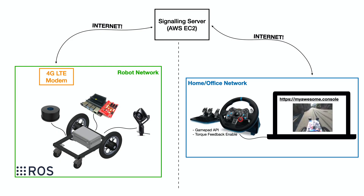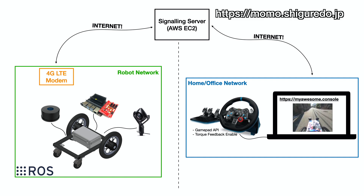The robot architecture is pretty simple. On the operator side, we just need a PC with a G29 steering wheel and go to the console page where we can see the video streaming. The data from the G29 steering wheel is sent through the internet to a signaling server, which we can launch on Amazon EC2 or any virtual server. The WebRTC solution we are using is Momo Ayame — you can check more details on the link here.